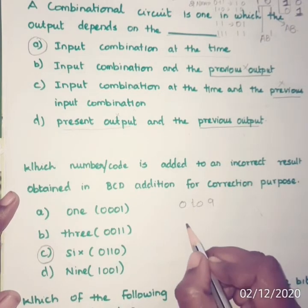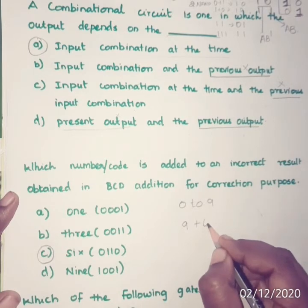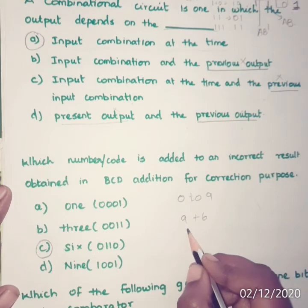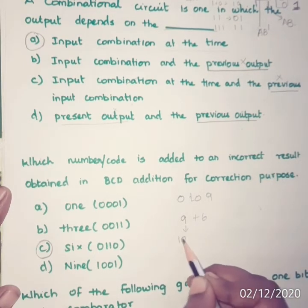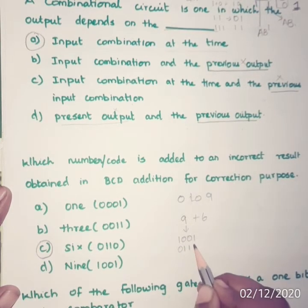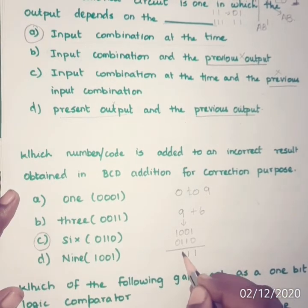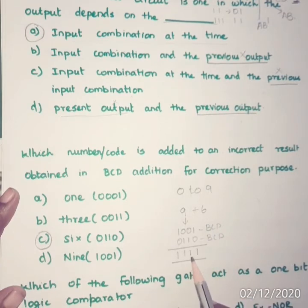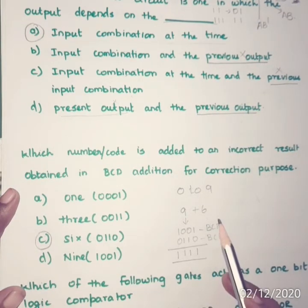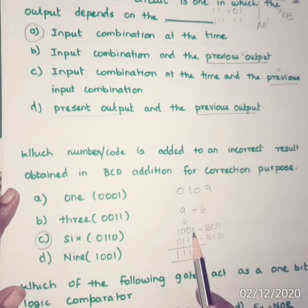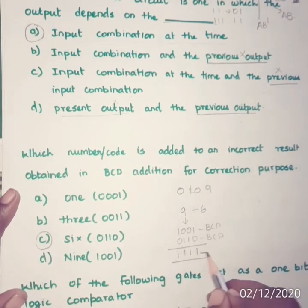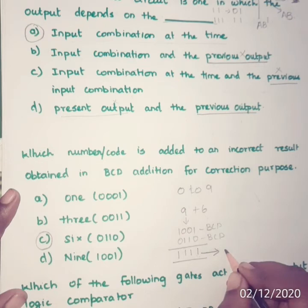Let us see an example. We are going to add 9 and 6, where 9 + 6 = 15. In BCD, 9 is represented as 1001 and 6 as 0110. Adding them gives 1111. But 1111 is not a valid BCD number because in BCD the maximum value is 1001, and we can only represent 0 to 9. To convert this invalid result into a valid BCD number, you have to add binary 6 to it.